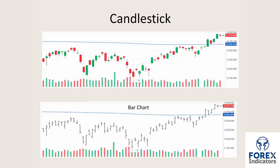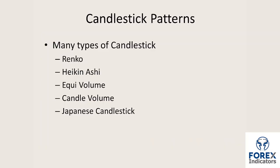There's nothing wrong with the bar chart. It's the forerunner to the candlestick chart. But as time moves on, the bar chart is becoming less favorable as new traders come in to the market — they're learning about trading with candlesticks. Now, candlestick patterns. There are many types of candlestick: Renko, Heiken Ashi, Equi Volume, Candle Volume. But we're going to be concerning ourselves with the Japanese candlestick.